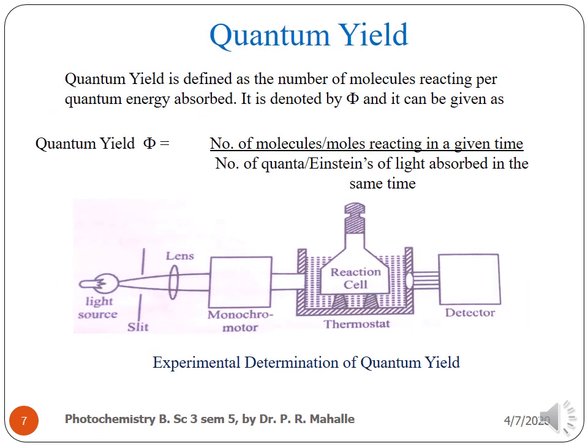Quantum yield is defined as the number of molecules reacting per quantum of energy absorbed. It is denoted by the symbol φ, and it is given as the ratio of the number of moles or molecules reacting in a given time to the number of quanta or Einsteins of light absorbed in the same time.